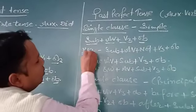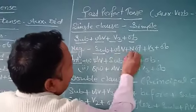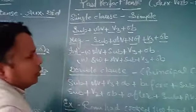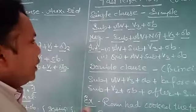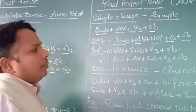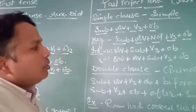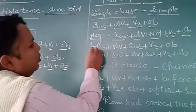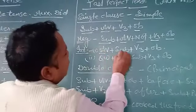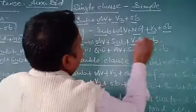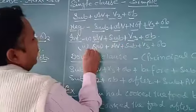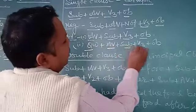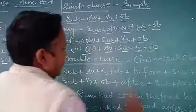In negative: subject, auxiliary verb 'had,' plus 'not,' plus verb third form plus object. Please pay attention: in past perfect, always use verb third form. In interrogative — first type: auxiliary verb 'had,' subject, verb third form plus object. Second type: question word, plus auxiliary verb 'had,' plus subject, plus verb third form, plus object.